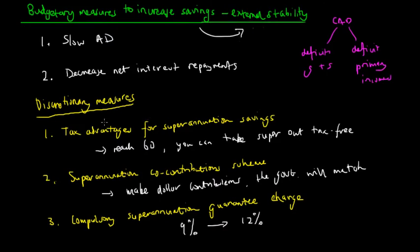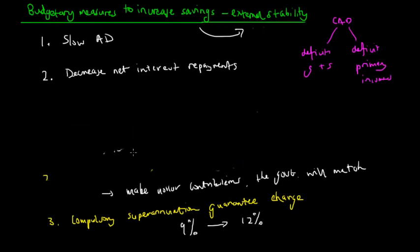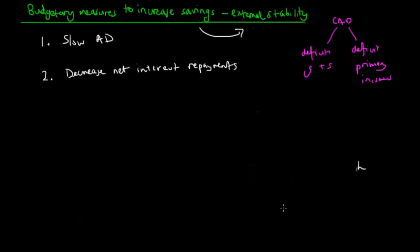So what advantages do these three major discretionary measures have on our savings pool and therefore external stability? I'm just going to rub this out and we're going to focus on how an increase in the national savings pool can decrease our current account deficit. Assume for the minute that we have low national savings. At the moment in Australia we do have low national savings.